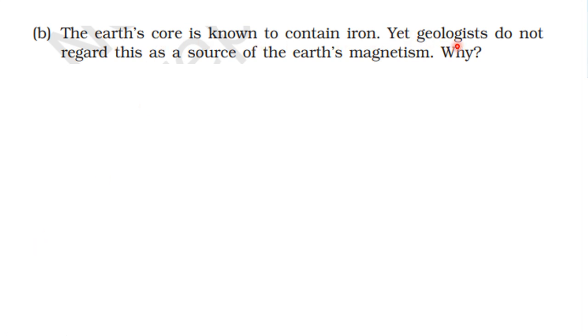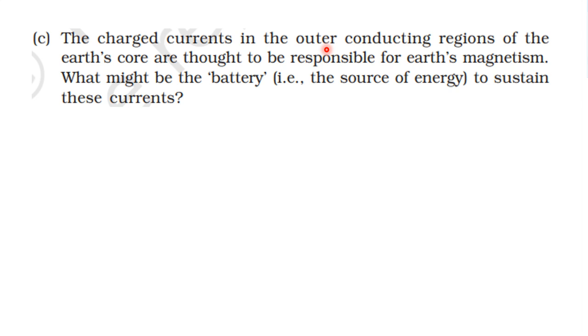The Earth's core is known to contain iron. Yet geologists do not regard this as a source of the Earth's magnetism. Why? The reason is the high temperature. At high temperature, iron loses its magnetic properties. The charged currents in the outer conducting region of the Earth's core are thought to be responsible for Earth's magnetism.